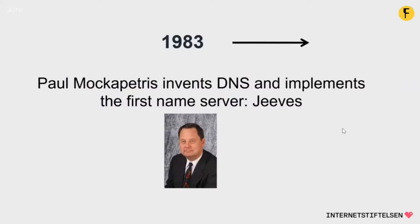He didn't obey that. Instead, he took the opportunity to develop something completely new based on an idea he had worked with on a smaller scale before. With the help of his boss, John Postel, he developed a new system for naming on the Internet, where he proposed that all names should include: one, names, for example, Internet Stiftelsen; and two, category or purpose, for example, .com for commercial purposes or .edu for education. The implementation of the first name server goes by the name Jeeves, and the protocol itself is described in RFC 1033, 34, and 35.